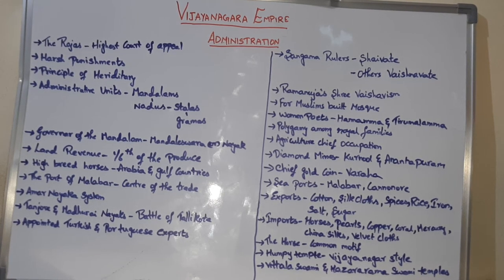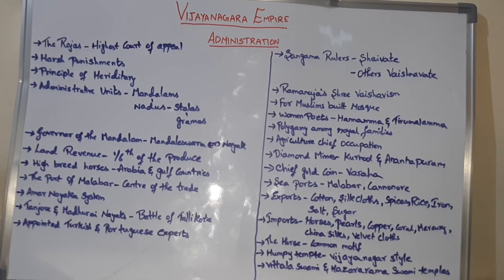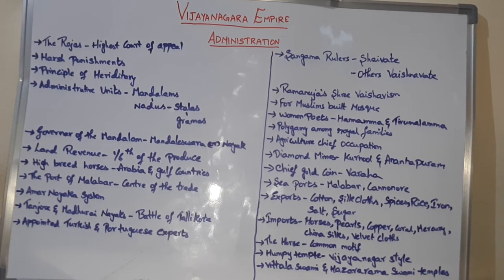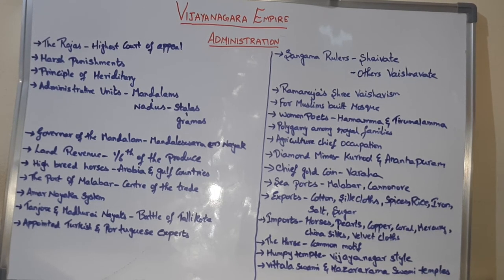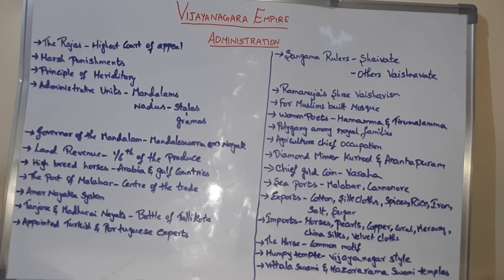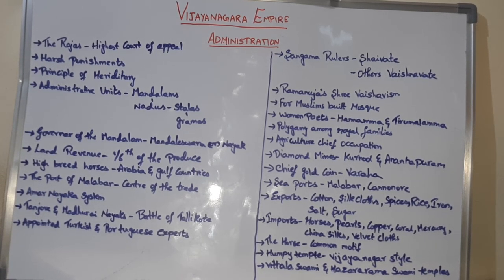The greatness of the Vijayanagara Empire is that they constructed mosques for Muslims. Many Muslim soldiers worked in the Vijayanagara army, and to respect their religion and feelings, the Vijayanagara kings constructed mosques for their prayers. These mosques were especially constructed by Devaraya II, who also granted Jagirs for the mosques.